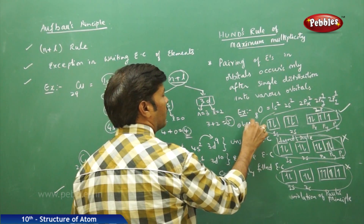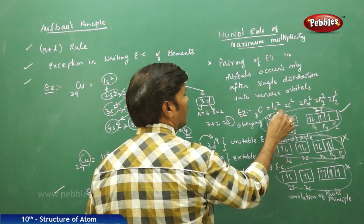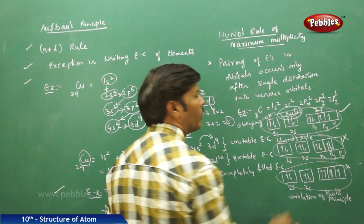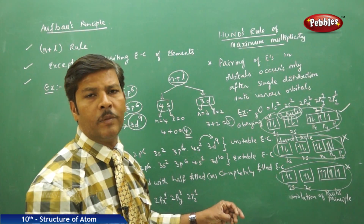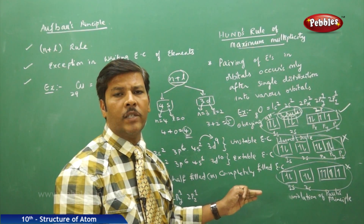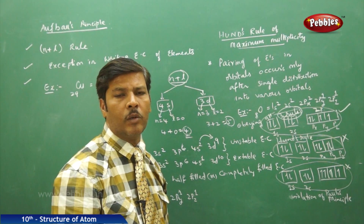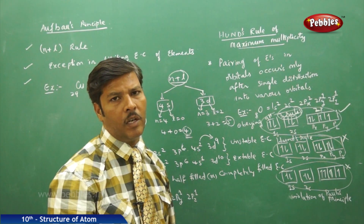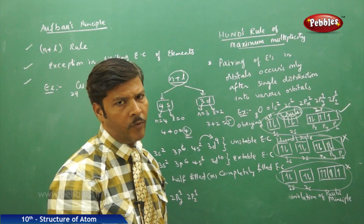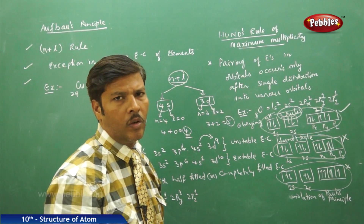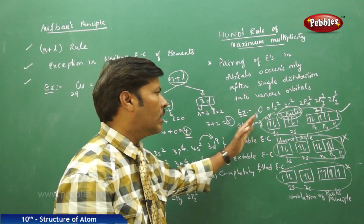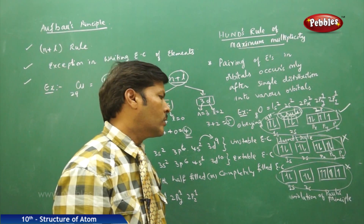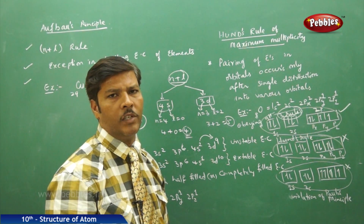The correct electronic configuration obeys all three rules: the half-bus (Aufbau) principle, Hund's rule of maximum multiplicity, and Pauli's exclusion principle. When writing electronic configurations for any element, you must follow all three important rules.